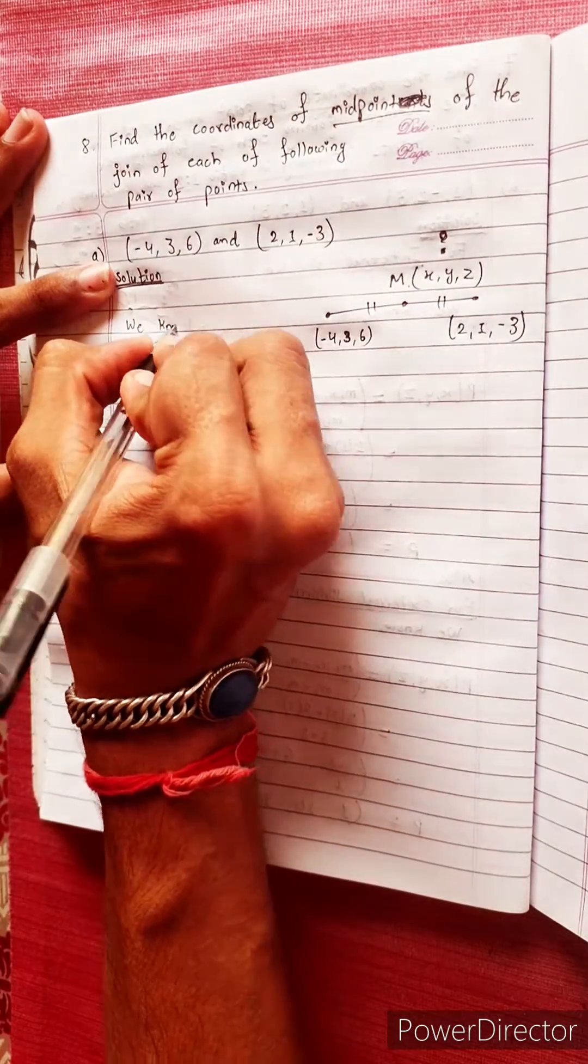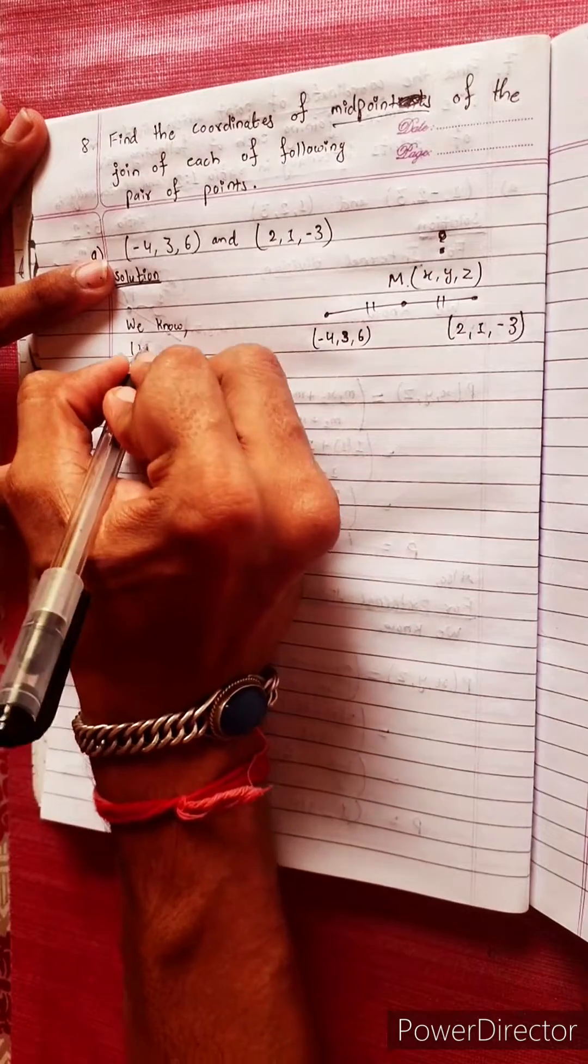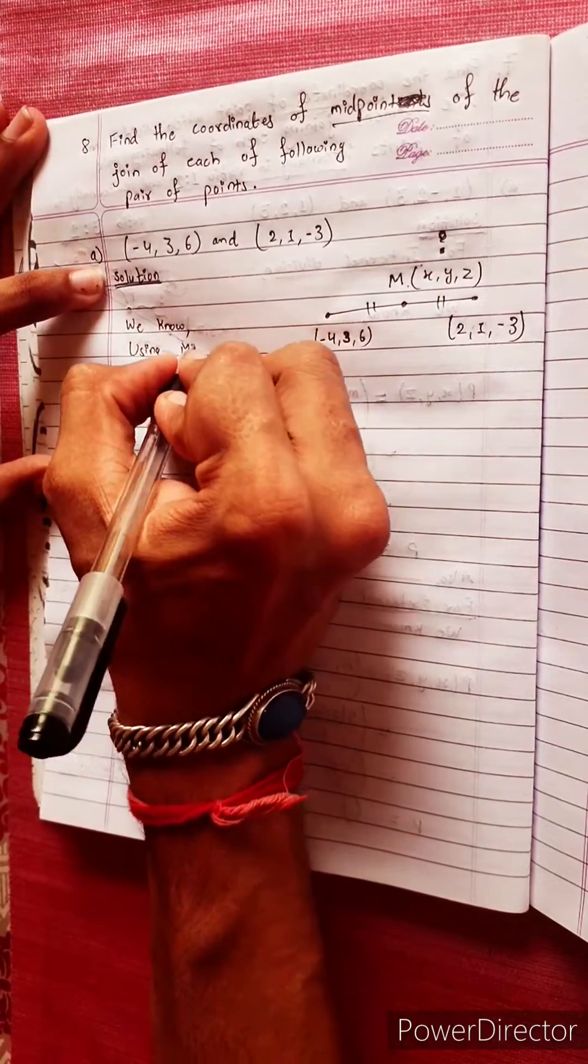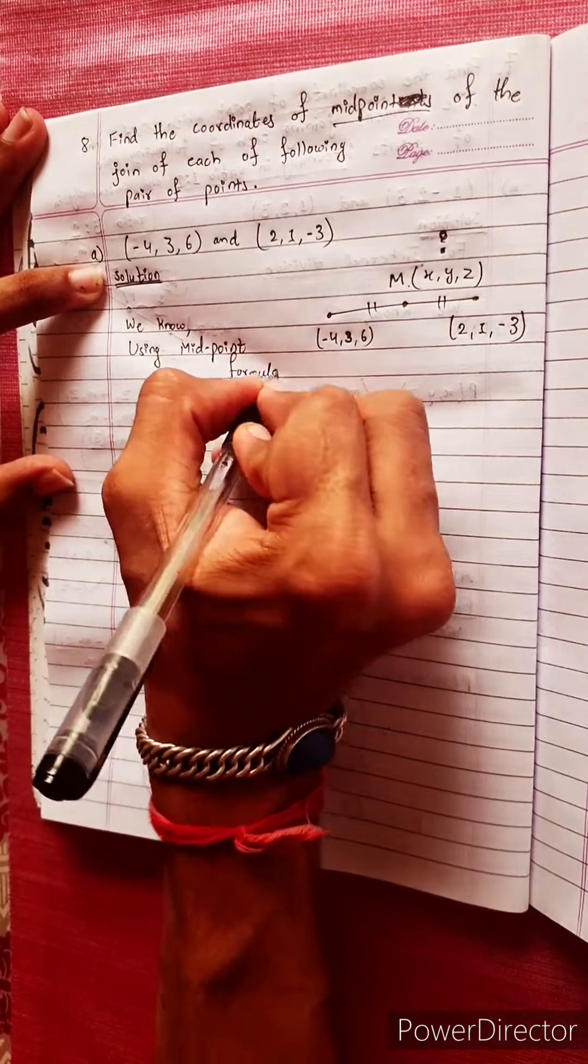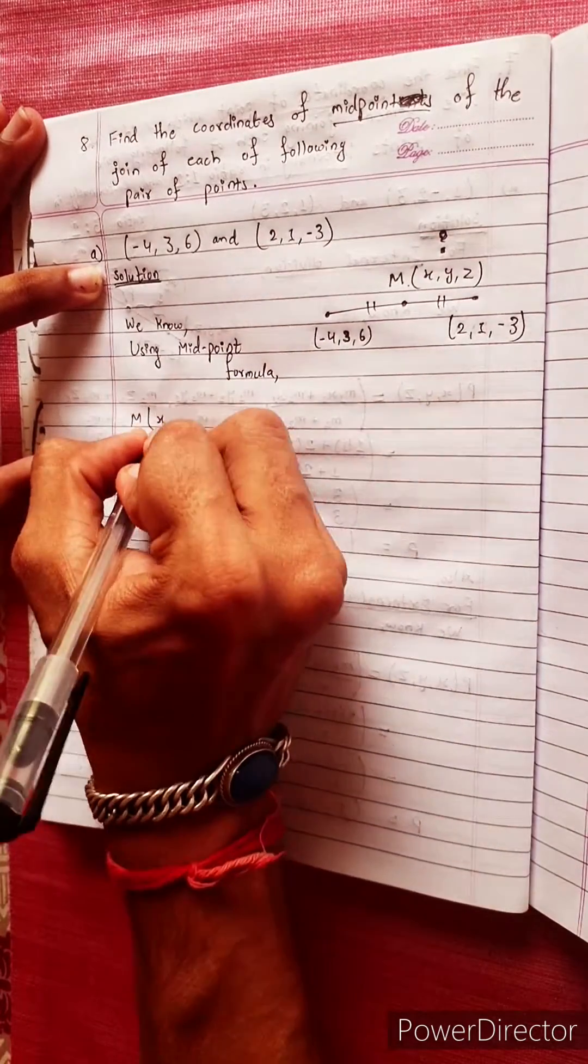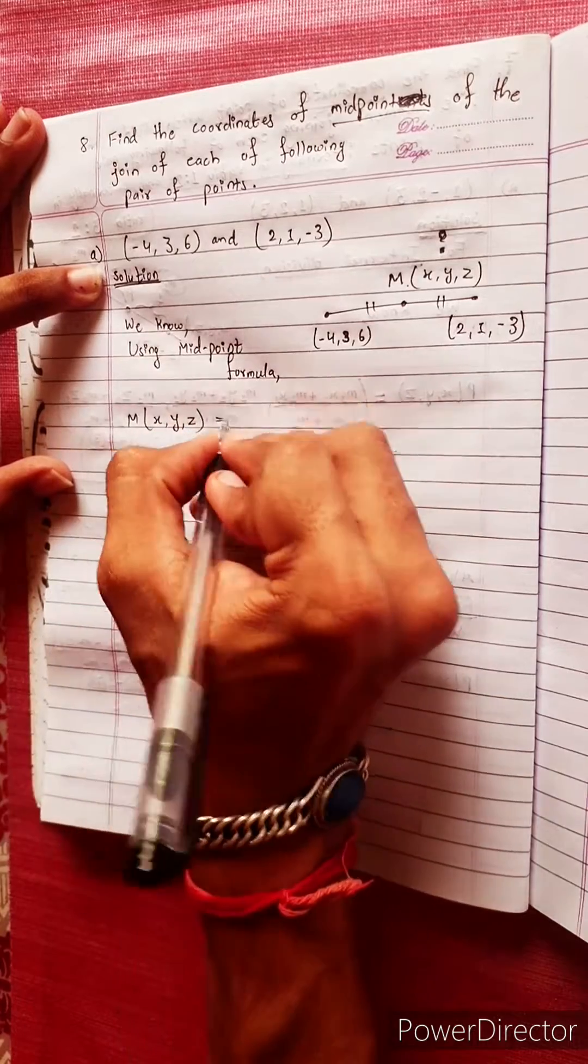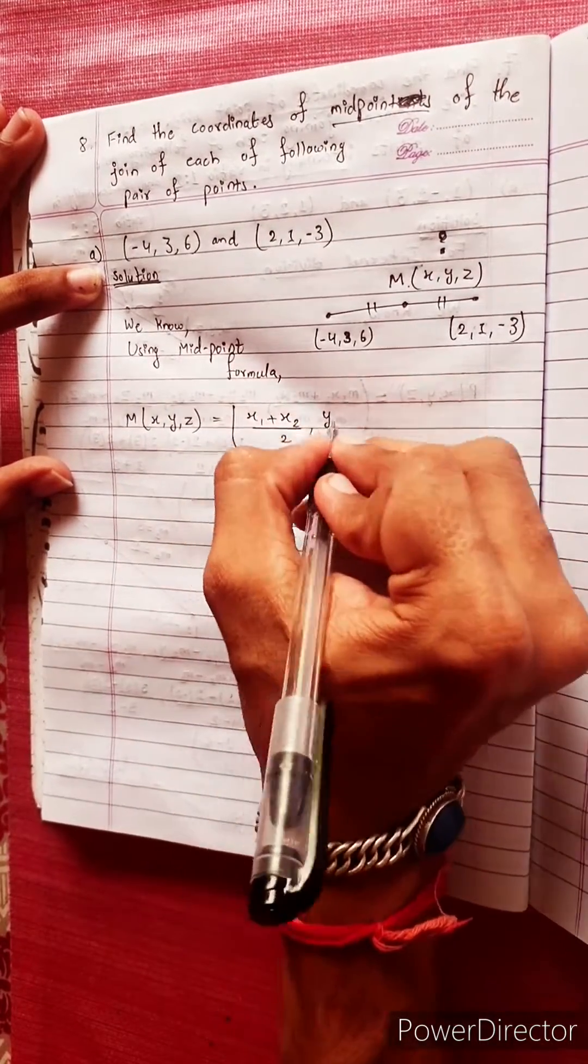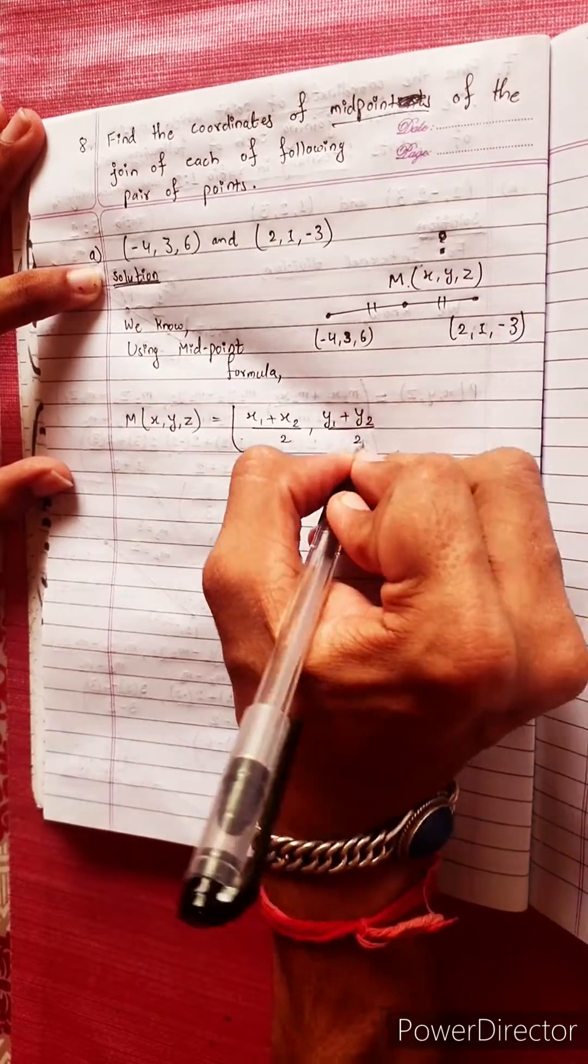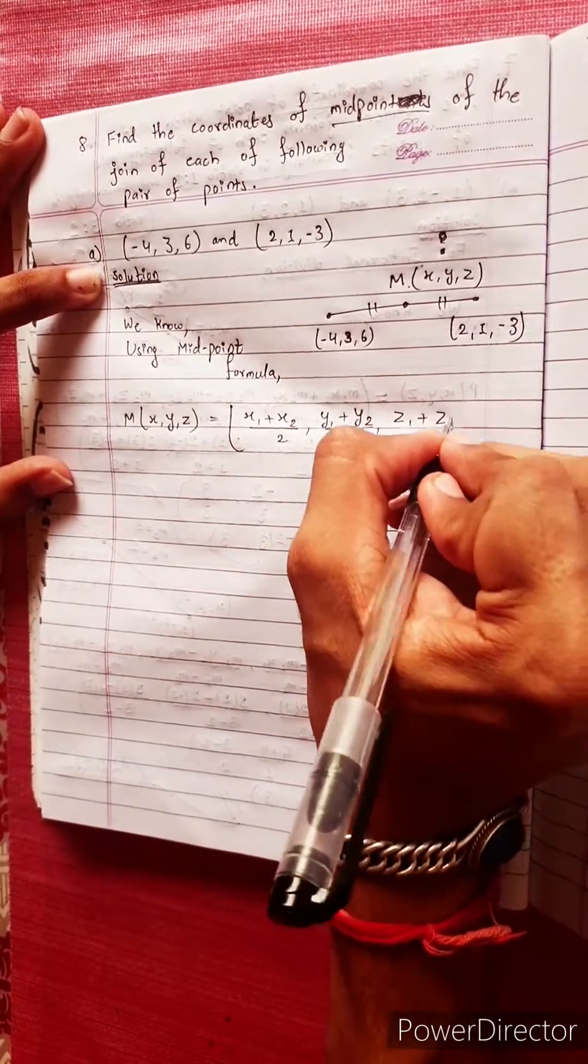We know, using midpoint formula. Midpoint formula: M(X, Y, Z) equals to X1 plus X2 by 2, Y1 plus Y2 by 2, Z1 plus Z2 by 2.